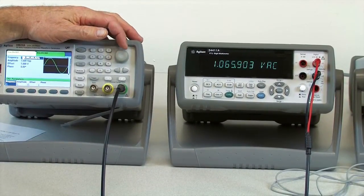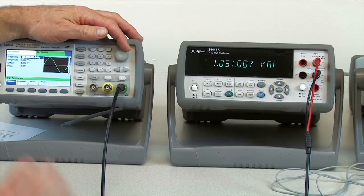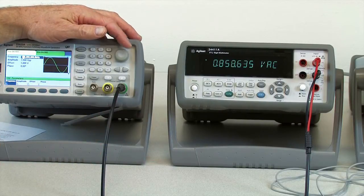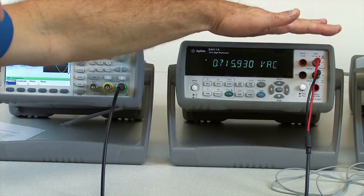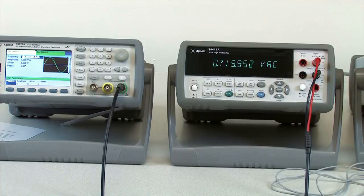As I increase the frequency, you'll see the amplitude will start to roll off. That's common with all true RMS multimeters. Both of these multimeters tend to roll off around 300 kilohertz.